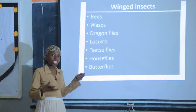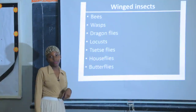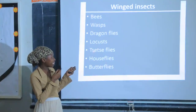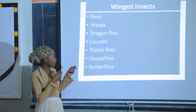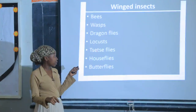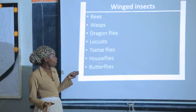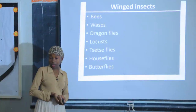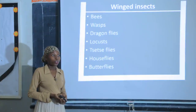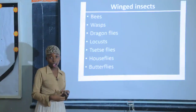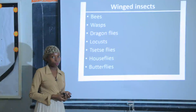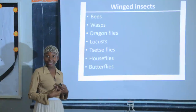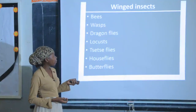The tsetse fly — notice it has a silent T, spelled T-S-E T-S-E fly. We have the housefly, which is common in dirty or damp places. If you dump rubbish anywhere, you are attracting houseflies, and they are very harmful. Then we have butterflies — these ones are cute. They have wings with colorful patterns.